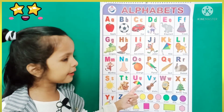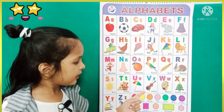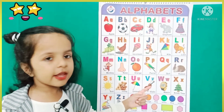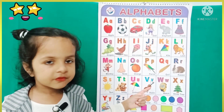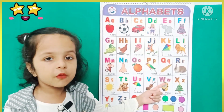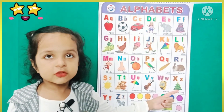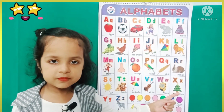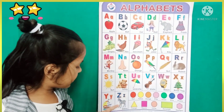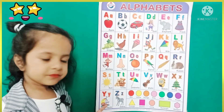U for umbrella, U for umbrella, B for violin, W for watch, X for xmostry, Y for yacht.